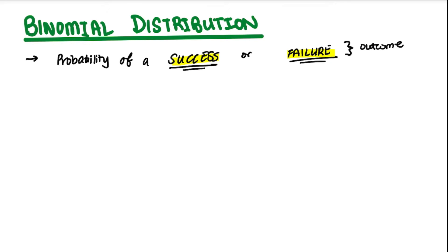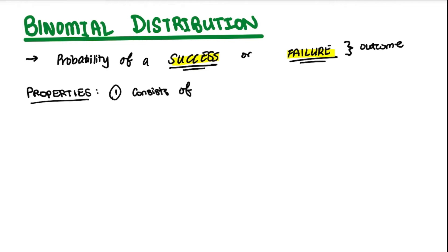In any binomial distribution, it has certain properties it must follow. The first property is that any binomial distribution will consist of n independent trials — n number of independent trials. This means that for every outcome, whether a success or failure, it has to be independent of each other. Each is an individual result, not a grouped outcome.